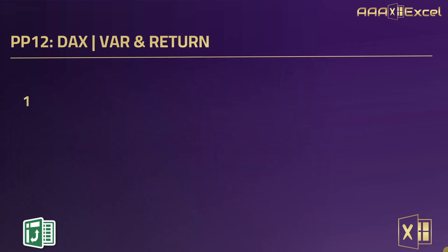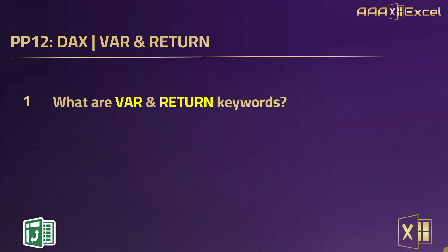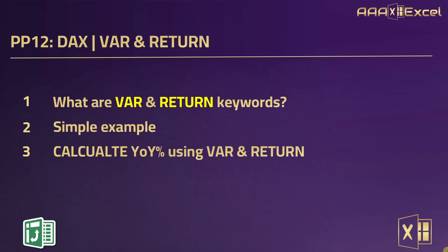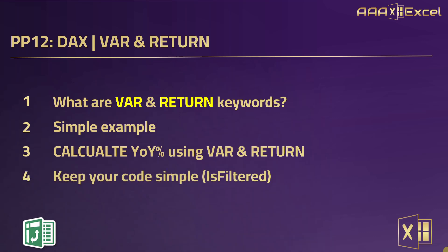We are going to discuss four points. First, what are VAR and RETURN keywords. Then we are going to take a very simple example to explain the concept. Then a more advanced example to calculate the year-over-year change inside a data model using VAR and RETURN. And finally, we are going to add more complication to our measure.